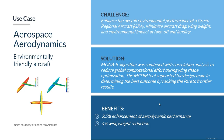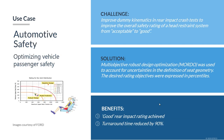Moving into more industrial success stories to show the broad application of parametric optimization. In aerospace and aerodynamics, Leonardo Aircraft wanted to design an environmentally friendly aircraft, minimizing drag, weight, and environmental impact. They parameterized the aircraft shape and used a genetic algorithm to optimize it, achieving 4% wing weight reduction and 2.5% enhancement of aerodynamic performance.